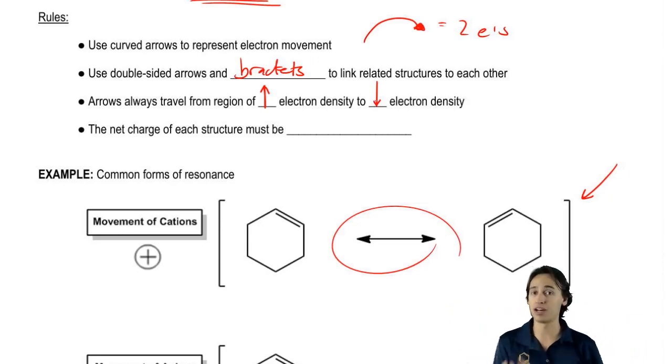For example, a positive charge would be an area of low density because that means that you have electrons missing, right? So what that means is you would never start an arrow from a positive charge. In fact, you would always go towards the positive because that's the area of low density.